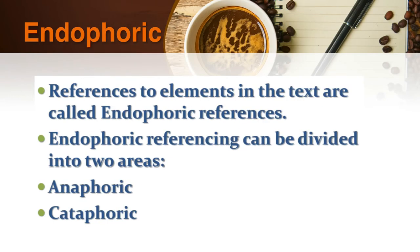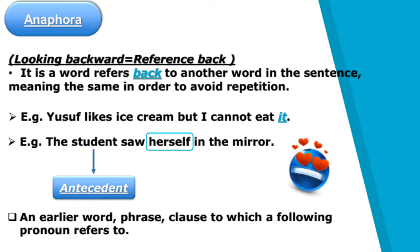We have now come to the second type of reference, which is endophoric. Endophoric reference can be classified into two: anaphora and cataphora. Anaphora means looking backward — it is a word which refers back to another word in the sentence. We use reference to avoid repetition. For example: 'Yousef likes ice cream, but I cannot eat it.' Here, 'ice cream' is the antecedent, while 'it' is the pronoun reference. Another example: 'The student saw herself in the mirror.' 'The student' is the antecedent, while 'herself' is the pronoun reference. Therefore, anaphora means an earlier word, phrase, or clause to which a following pronoun refers.